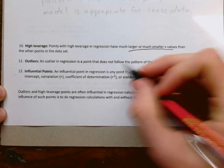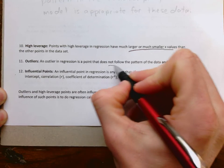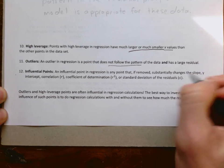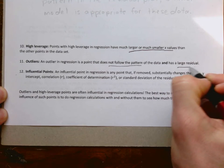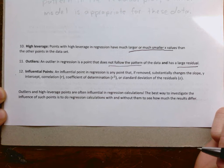For outliers, there are two criteria. Number one, it has to not follow the pattern of the data. That means it's unusual and not like the rest of them. Number two, it has a large residual. Those are the two key criteria to be classified as an outlier.